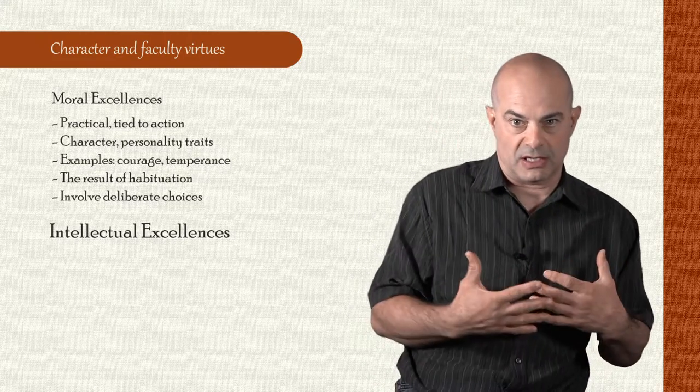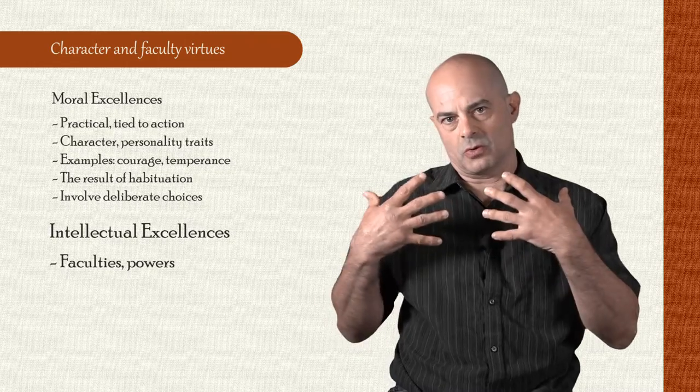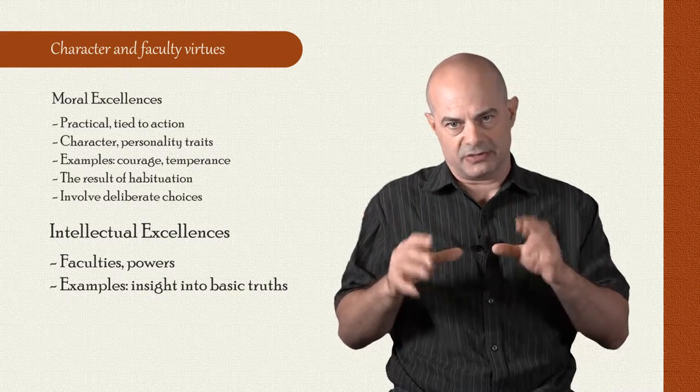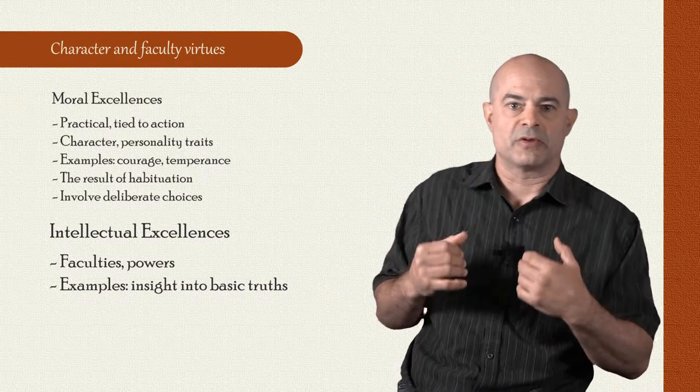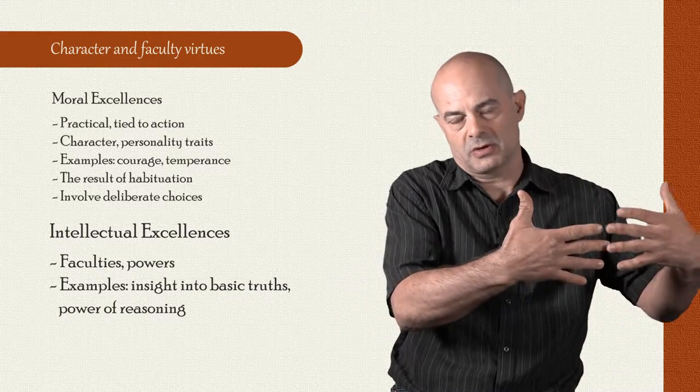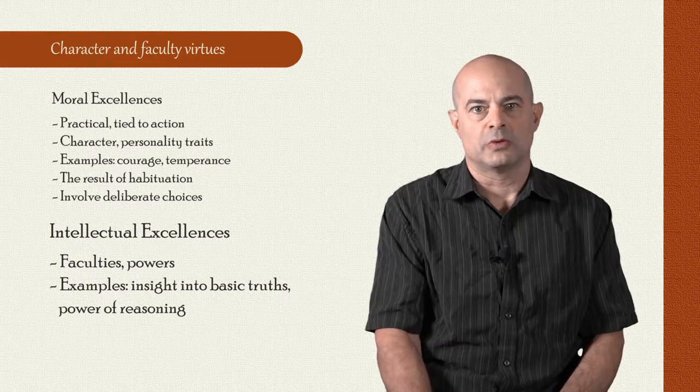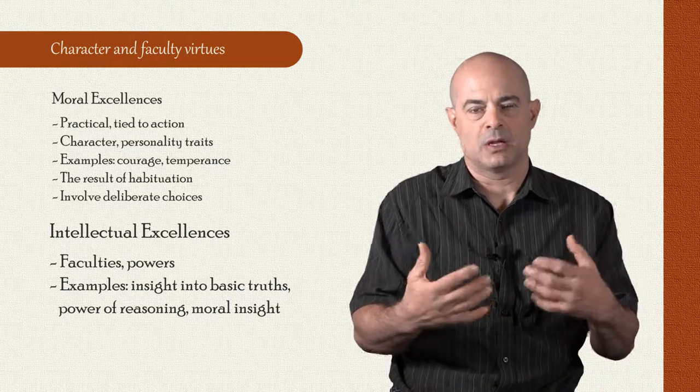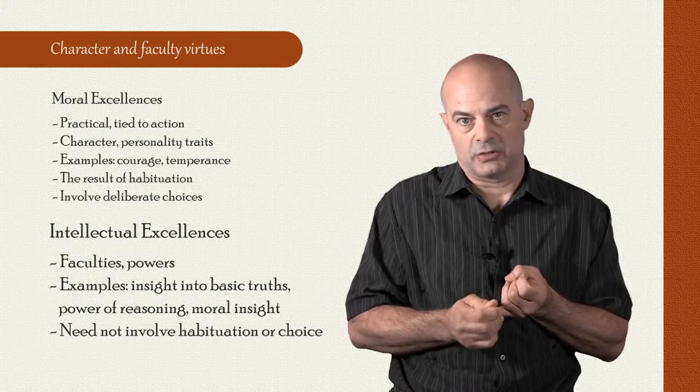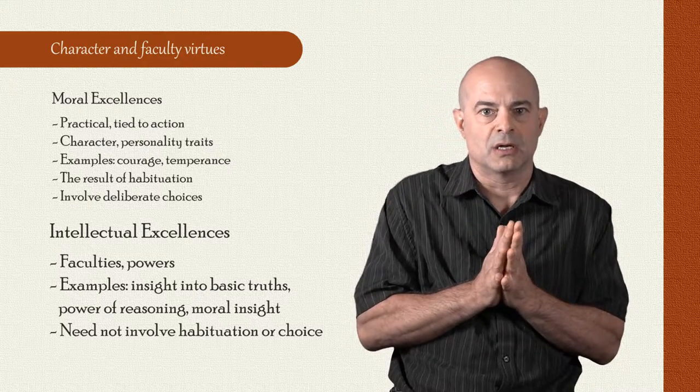Aristotle thought of intellectual virtues or intellectual excellences in a different way. These he thought of more like intellectual faculties or powers. For example, he thought one kind of intellectual excellence was a kind of insight into first truths or the most basic truths of reality. Another kind of intellectual excellence was the power of reasoning, which allowed us to move from these first truths to figure out other important things. Another example would be insight into what things are good or what things are valuable. These don't necessarily involve habituation, and neither do they necessarily involve choice or will.